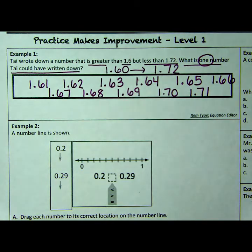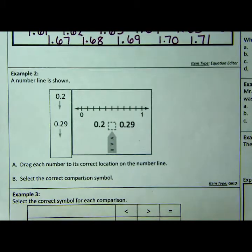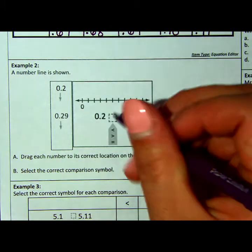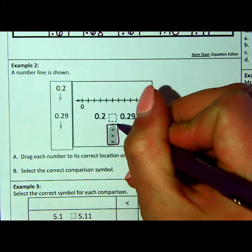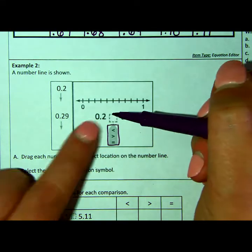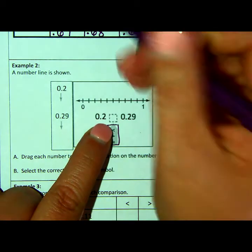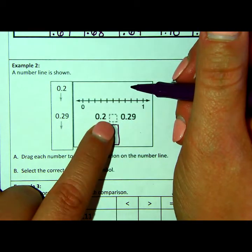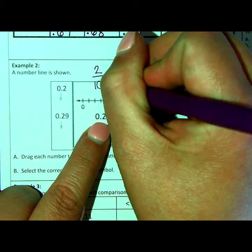Let's look at example number two. It looks like we have an inequality here. We have to choose the correct symbol. So we have 0.2, and it's just one decimal place after the number, or one place value after the decimal point. So that's two tenths.